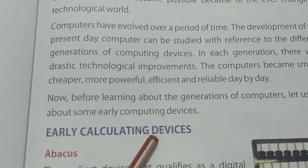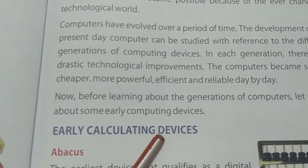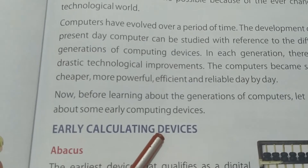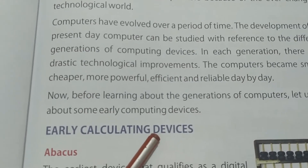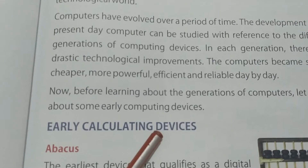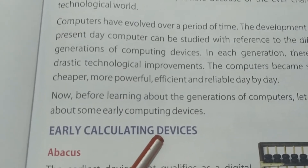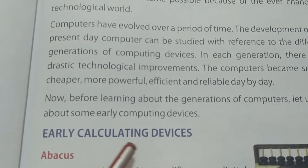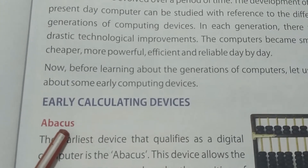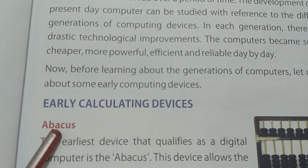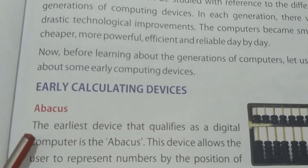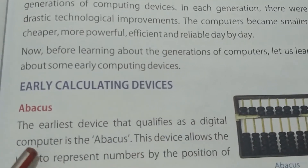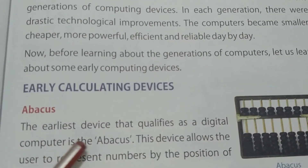Calculating devices means a device that is used to carry out various calculations like addition, subtraction, multiplication, etc. with efficiency and speed. The first early calculating device is the abacus. The earliest device that qualifies as a digital computer is the abacus.